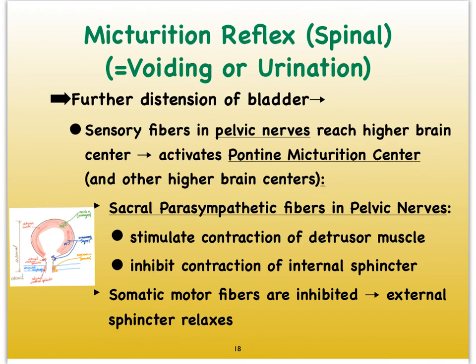In summary, if you think logically about what should happen to the detrusor muscle and the internal and external urethral sphincters during urine storage versus release, it shouldn't be too difficult to figure out. The main thing to memorize is the names of the nerves and the types of fibers they carry, along with the sensory fibers that relay stretch information from the detrusor muscle. We're now done with the urinary tract and ready to move on to the kidneys — there are lots of videos on just the kidneys, so be prepared.